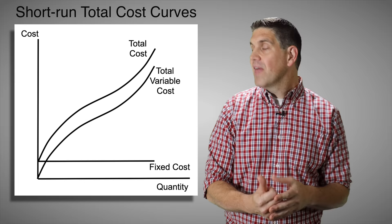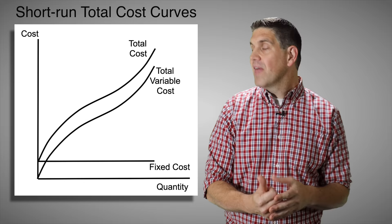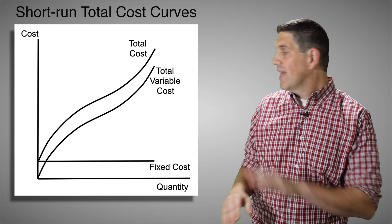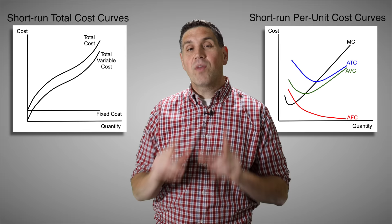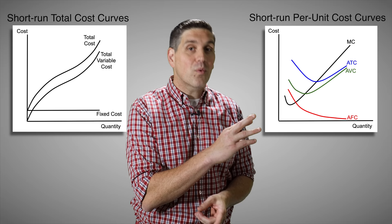Those are the per unit cost curves — they show how much each unit costs. You can also find the total cost curves, but keep in mind that's not a very important graph. You're not expected to draw it. Just understand the idea, because it shows key concepts like fixed costs, which remain the same for every quantity, and variable cost, where total cost equals fixed cost plus variable cost. The per unit cost curves graph is the one you need to use, because that's the one you'll see for the rest of the unit.